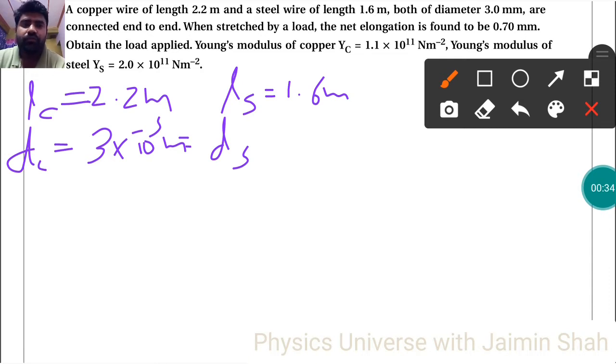Are connected end to end when stretched by a load. The net elongation is found to be, so here delta Lc plus delta Ls is 0.7 into 10 raised to minus 3, because the sum of this elongation is delta Lc plus delta Ls.